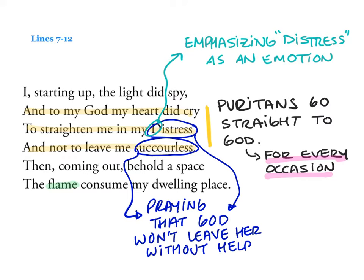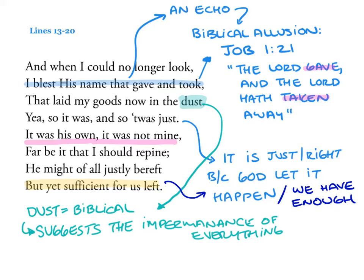'And when I could no longer look, I blessed his name that gave and took, that laid my goods now in the dust. Yea, so it was, and so it was just. It was his own. It was not mine. Far be it that I should repine. He might have all justly bereft, but yet sufficient for us left.' What Anne Bradstreet is doing here is typical Puritan writing — there's a big biblical allusion to Job, where the Lord gives and the Lord takes away. Everything is God's; it was just because God let it happen. Also, her things being in the dust is another biblical image — 'remember you are dust, unto dust you shall return' — suggesting the impermanence of everything.